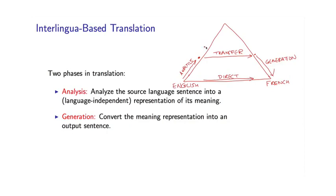There might be various levels of analysis, so we might have some method of going a bit higher up the pyramid, in which case it becomes even easier to translate. Of course, it may be harder to form a deeper analysis, so there's some trade-off there. The final type of translation system takes this idea to the extreme.